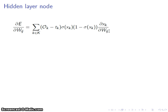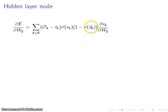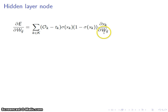We're going to do exactly the same as for the output layer nodes. Notice that sigma of the input is just the output of the kth node, and 1 minus sigma of the input to the kth node is also a function of the output of the kth node. So these two terms are going to turn into o_k times 1 minus o_k. This term — the derivative of x_k with respect to the weight from i to j — I particularly dislike. I'm trying to take a derivative of something with subscript k as it changes based on subscripts i and j, neither of which are the same.